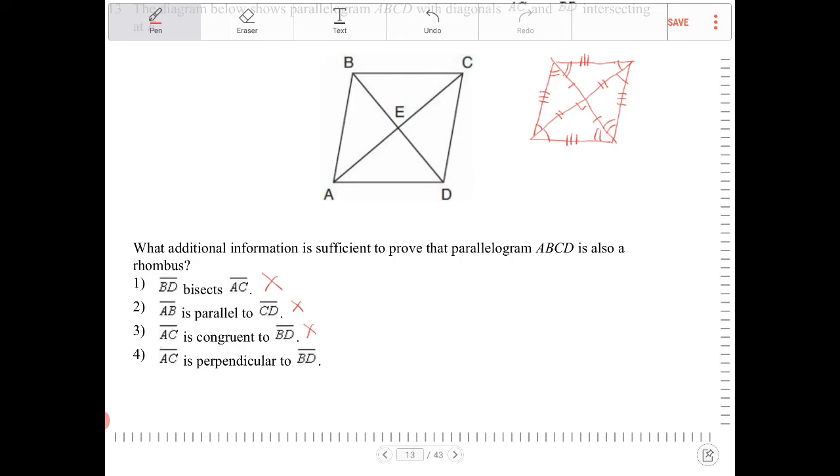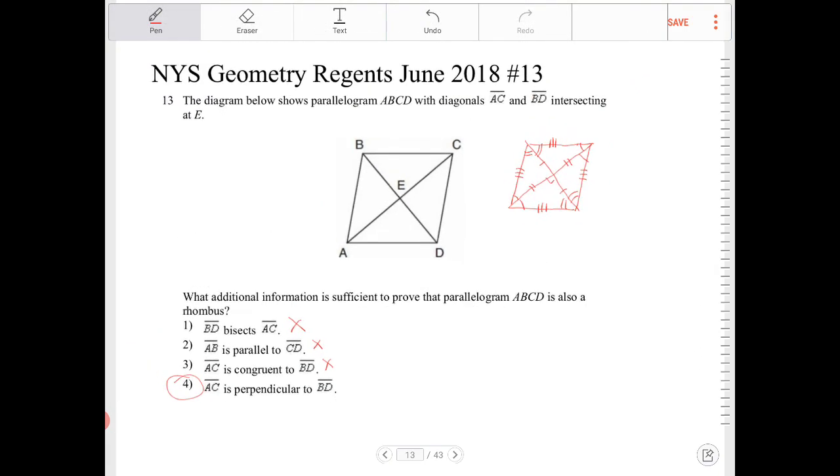AC is perpendicular to BD. That is the defining quality that makes a parallelogram a rhombus.